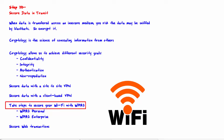WPA2 comes in two flavors: Personal, which uses a pre-shared key where all users have the same key, and Enterprise, which uses a RADIUS server where each user has a unique key. Personal is easier to set up; Enterprise is more difficult but more secure, especially for enterprise environments.